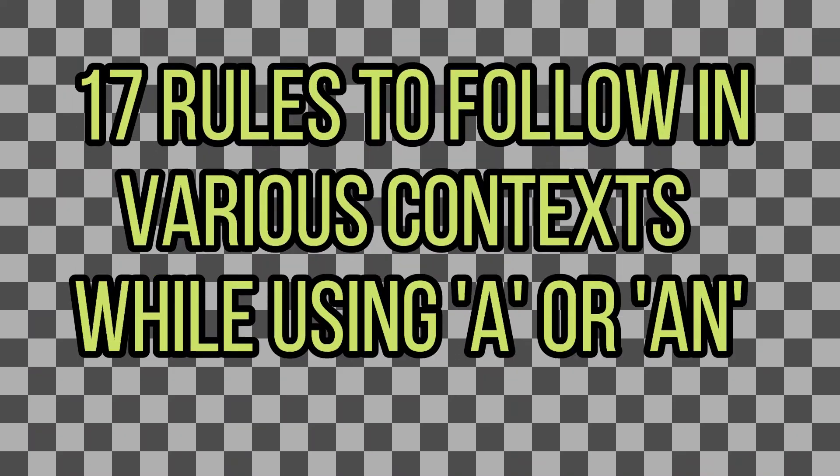Let's get started and check what A and AN are about. I'm pretty sure there are around 17 rules you gotta follow while using A or AN. Sometimes you may have to use A and sometimes AN, depending upon the scenario and the noun. If the noun starts with a vowel sound, you use AN before it. If the noun starts with a consonant sound, you use A. I'll go through the rules one by one so you can grasp and use them whenever necessary.